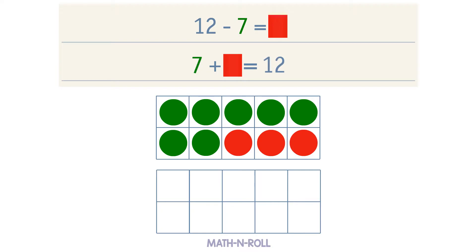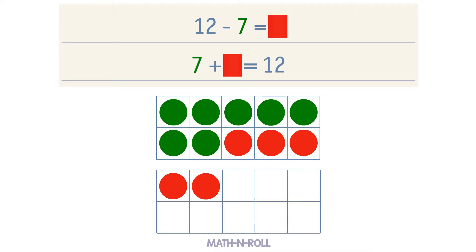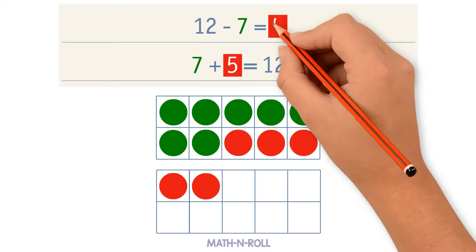Now add more red circles to make 12: 11, 12. We started at 7. We counted up 3 to fill the 10 frame, then we counted 2 more to make 12. 3 plus 2 equals 5, so we counted up 5 to get 12. So 5 is our unknown number. This means that 7 plus 5 equals 12, and 12 minus 7 equals 5.